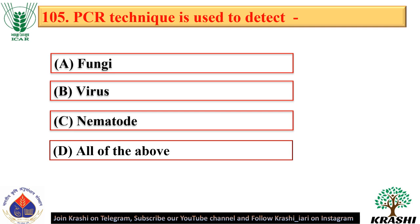Question number 105. PCR or polymerase chain reaction technique is used to detect fungi, viruses, and nematodes. The correct answer is all of the above.